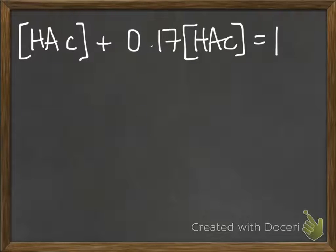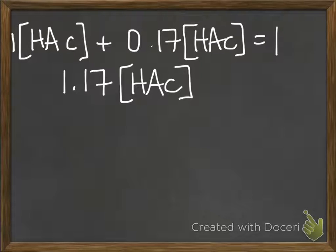So then you can do some algebra and solve for the concentration of acetic acid. You've got a 1 here that you have to remember about. So when you add those together, you get 1.17.